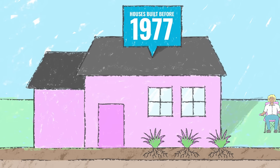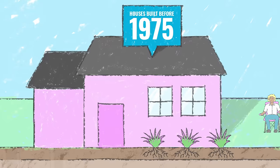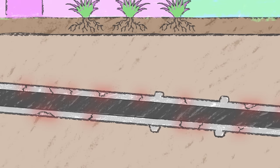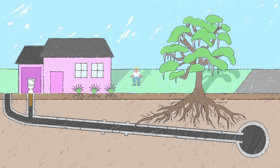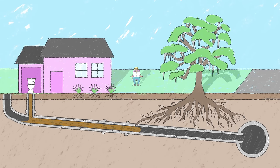Houses built before 1975 are more likely to have sewer lines made of outdated materials that are prone to leaks, cracks, or damage from tree roots, which could lead to sewage backups into your yard and your home.